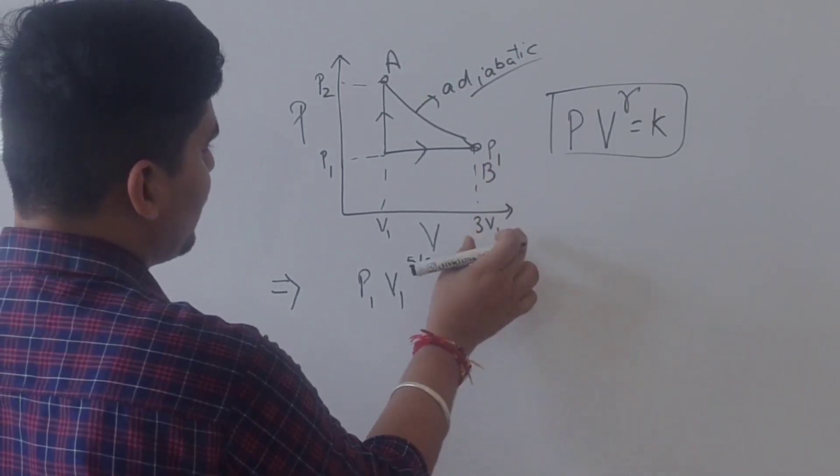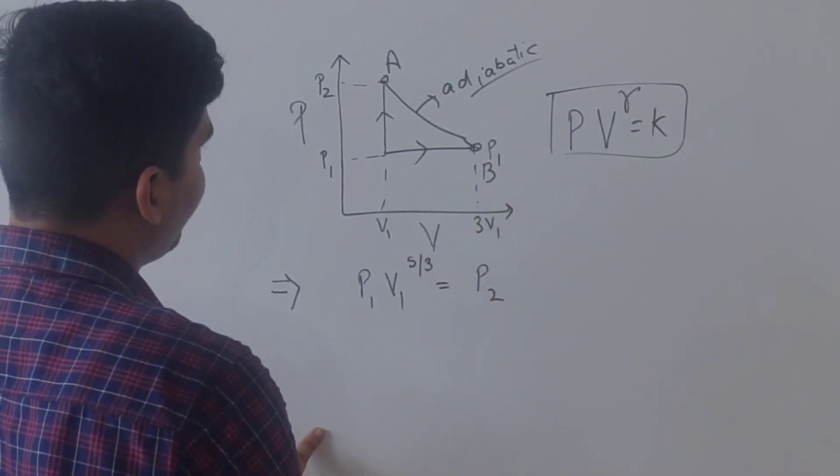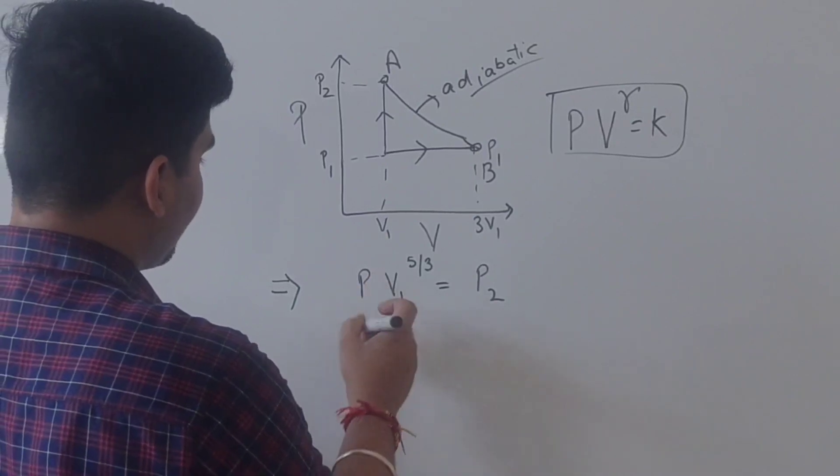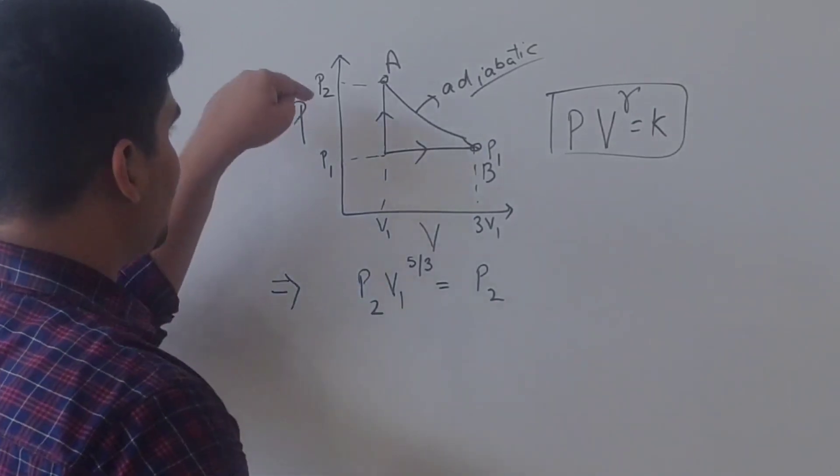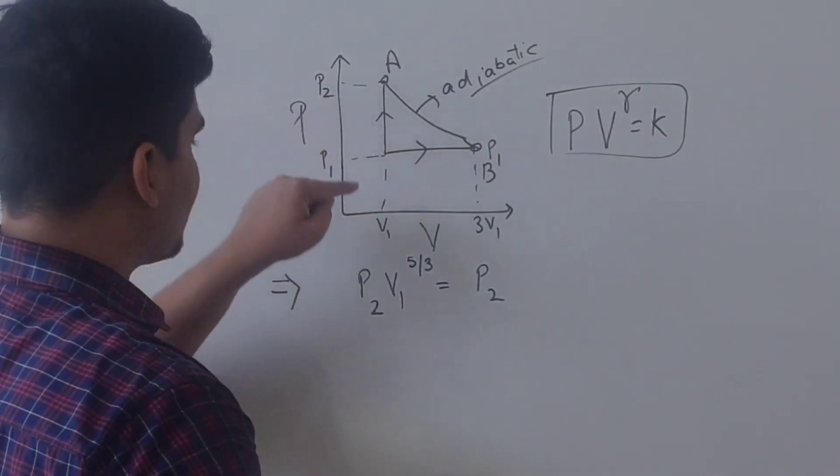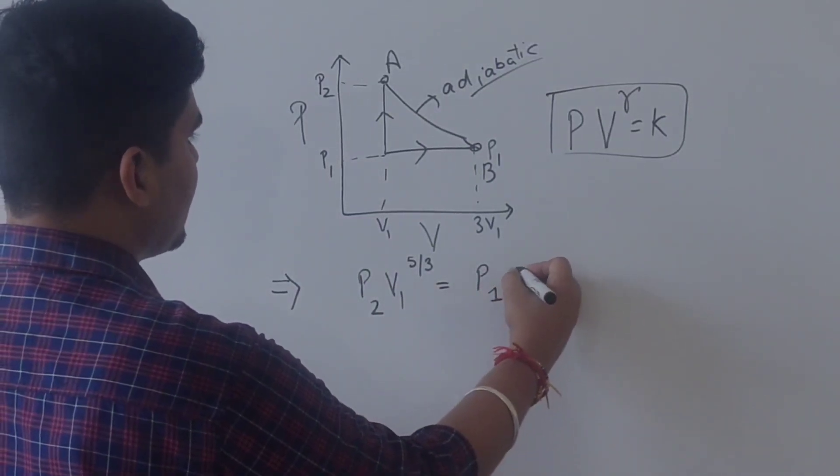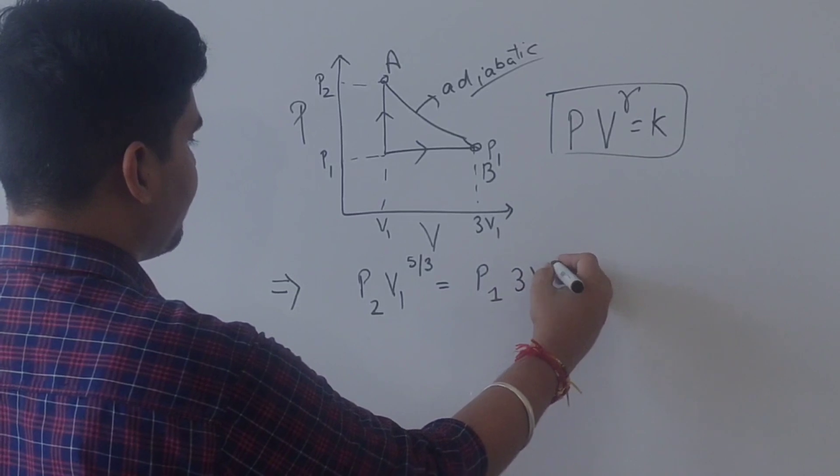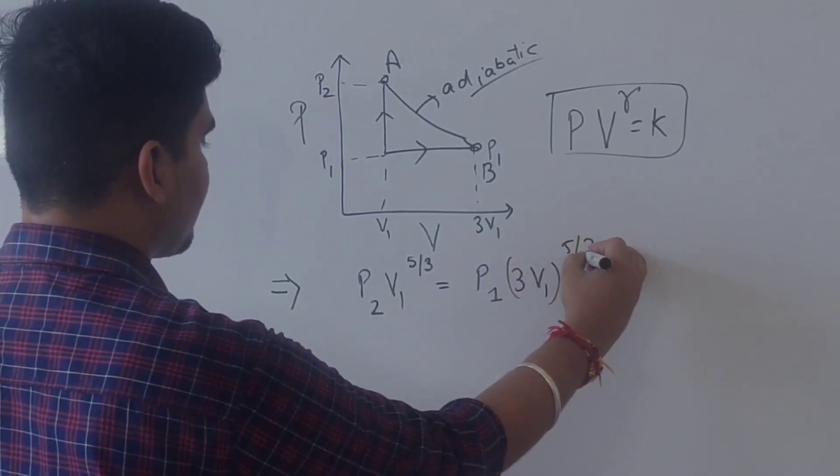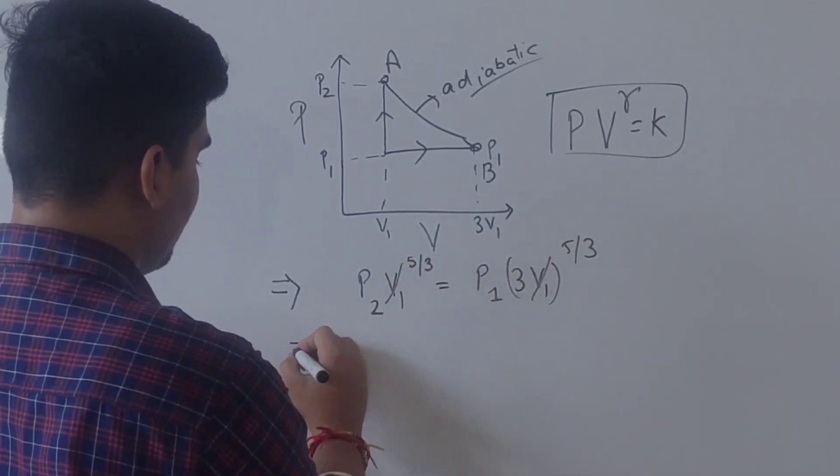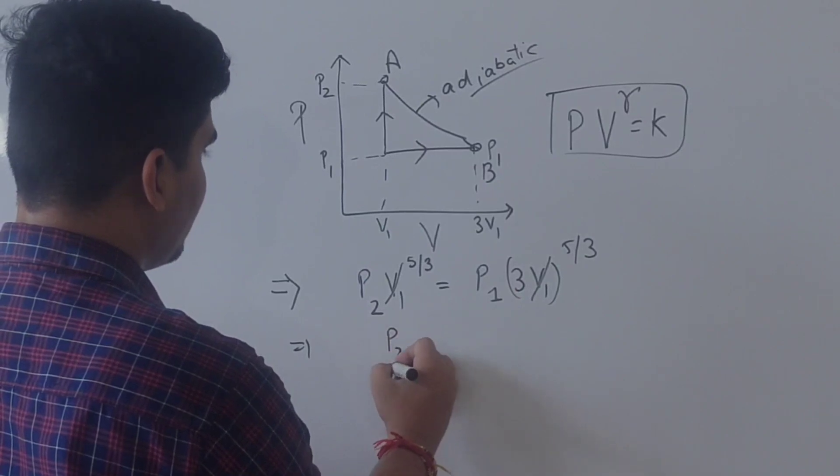V2, which is 3V1. Or I have written it wrong, so this is V1 where P2 pressure is, volume is V1. And this is P1 where volume is 3V1. So this is 5 by 3. V1, V1, V1 cancel, we will get P2 by P1.